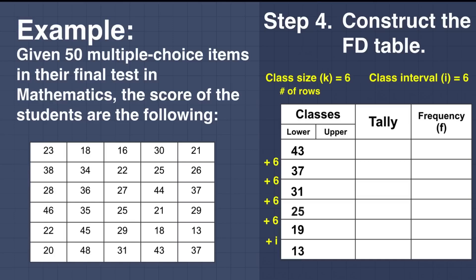Now let us complete the upper values. At the bottom, observe the second row — the number is 19, so before 19 that is 18. Using the formula: lower value plus I minus 1 gives 13 plus 6 minus 1, which also equals 18. For the next rows, just add the interval of 6: 18 plus 6 is 24; 24 plus 6 is 30; 30 plus 6 is 36; 36 plus 6 is 42; and 42 plus 6 is 48.